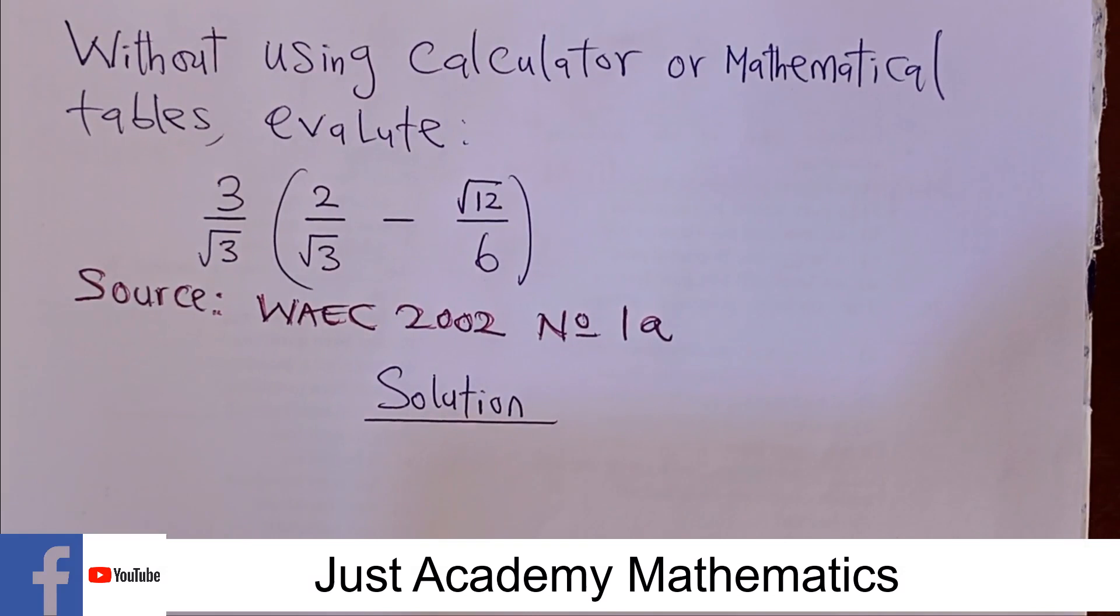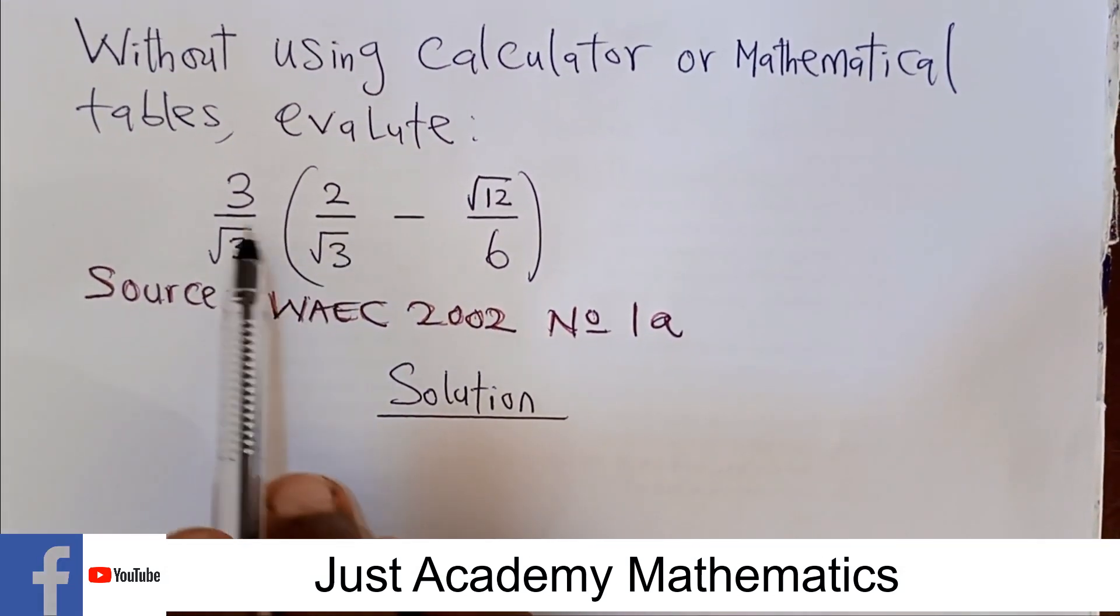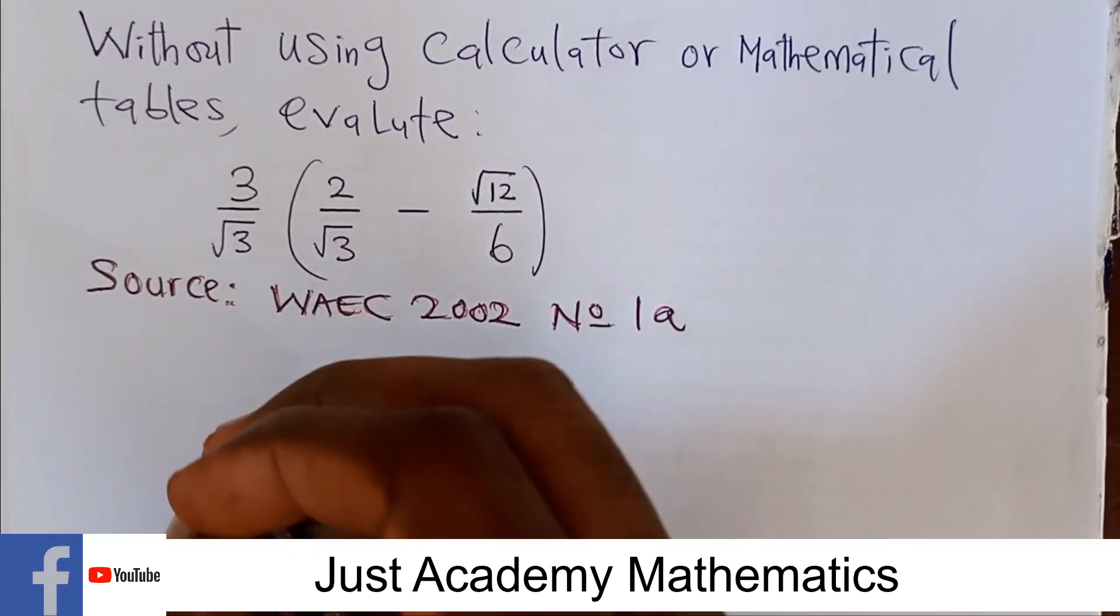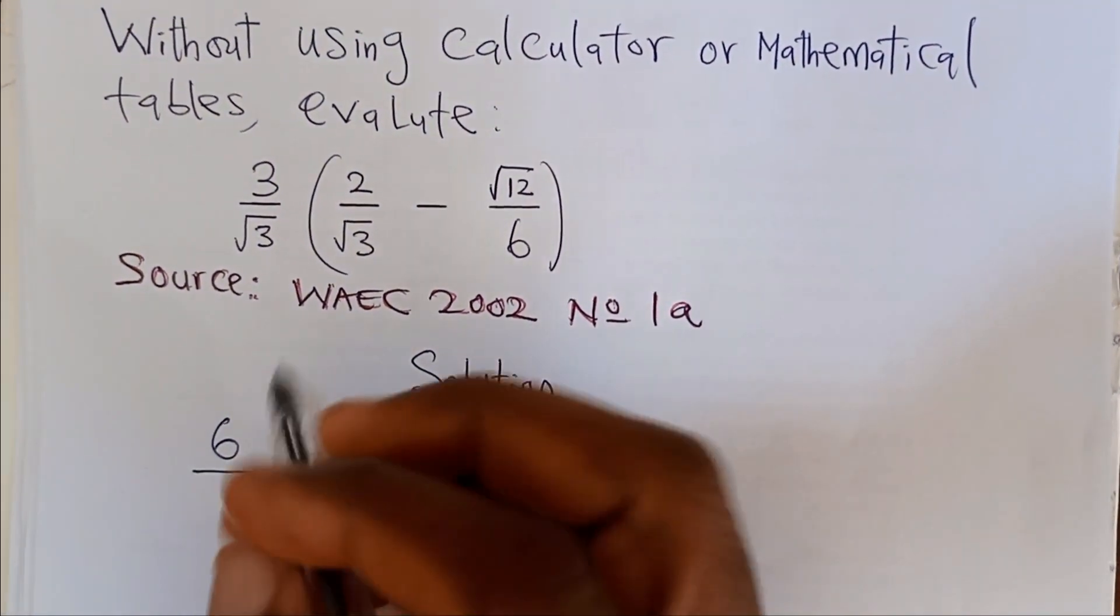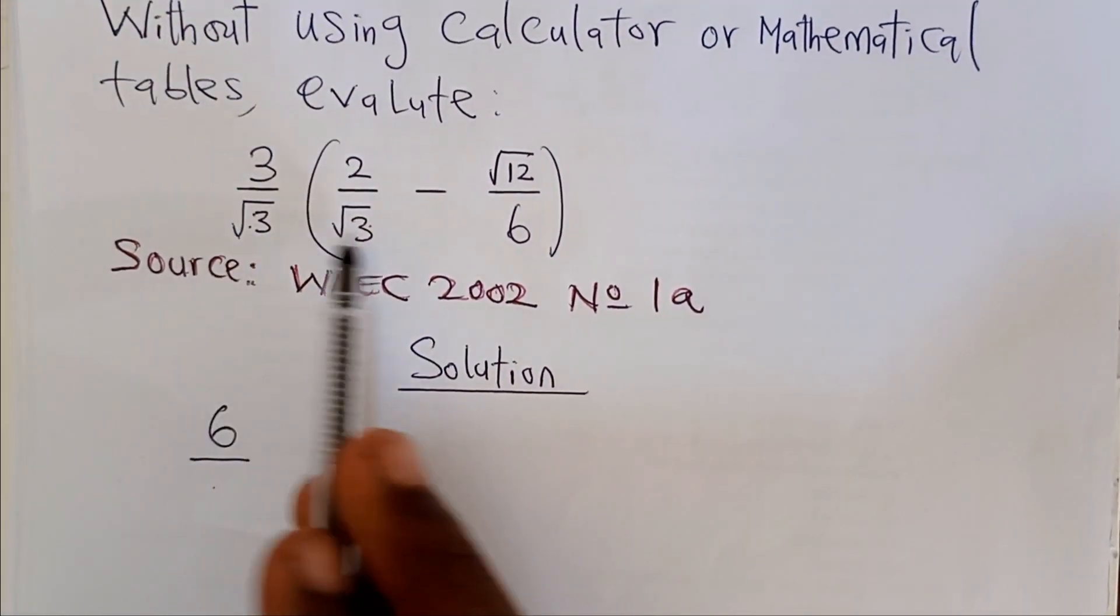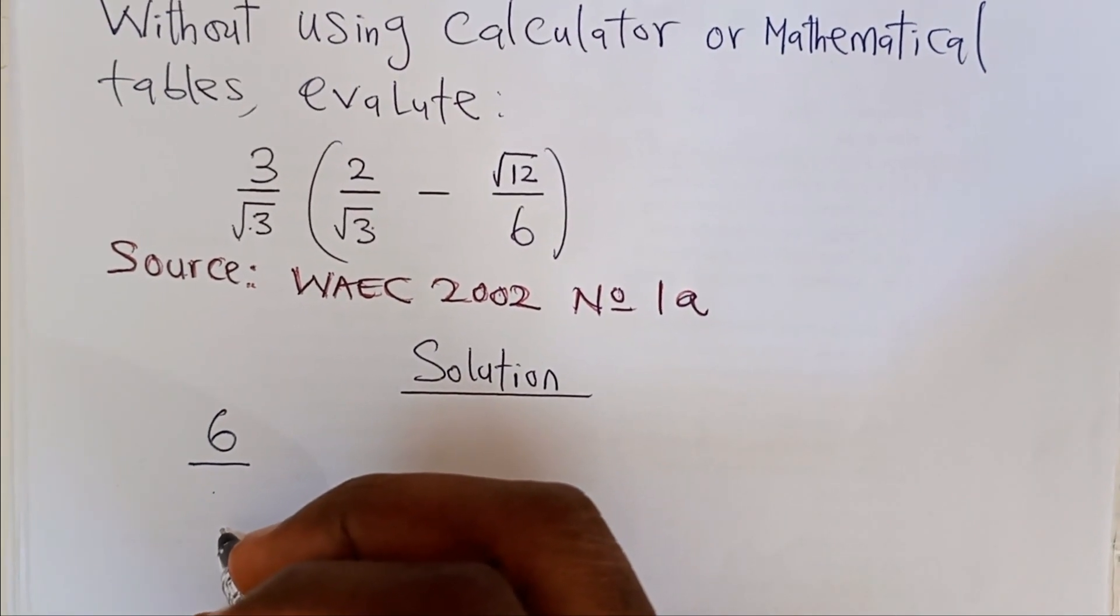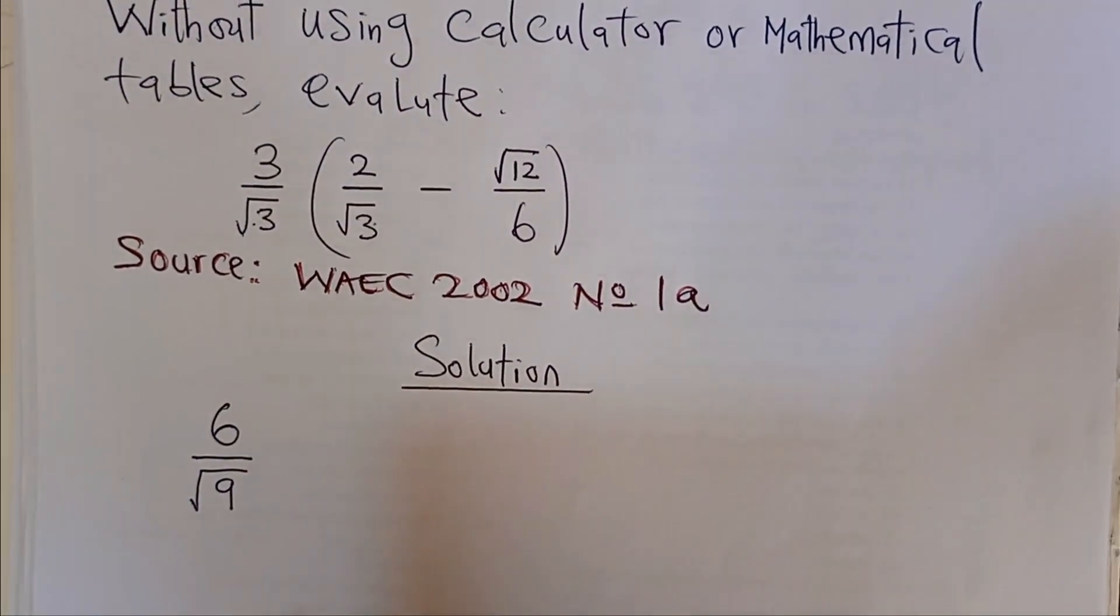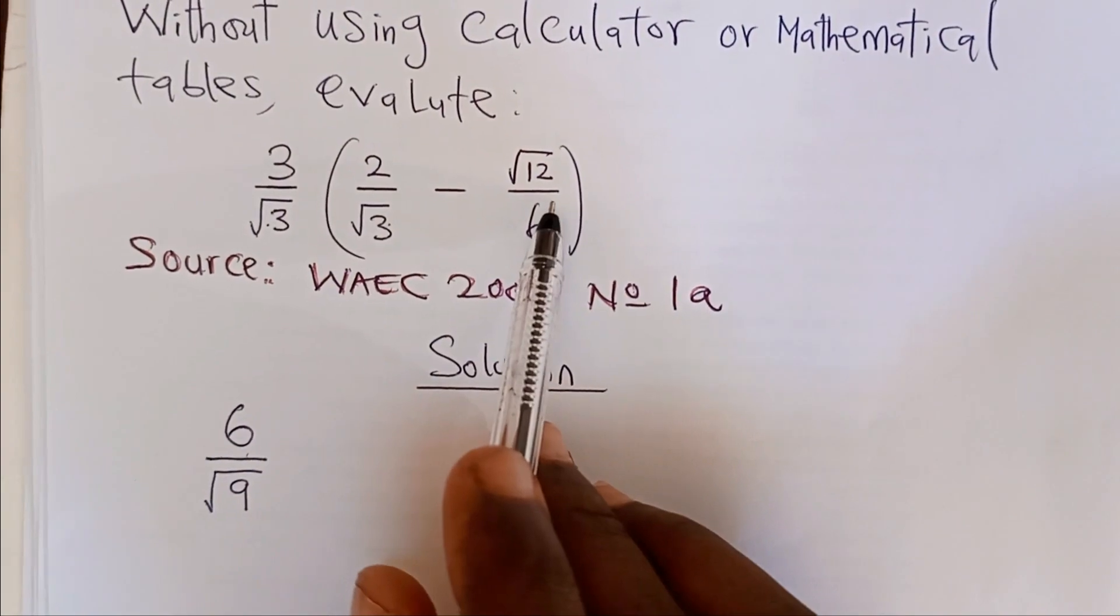Let's open the bracket. This is 3 over root 3 multiplying 2 over root 3. The numerator will times the numerator, so 3 times 2 will give me 6. And we have over root 3 times root 3, which is root 9. Square root of 9 is 3. Let's go ahead for the next one.